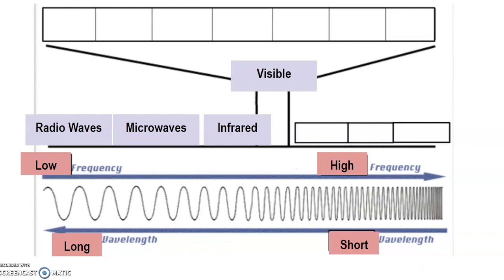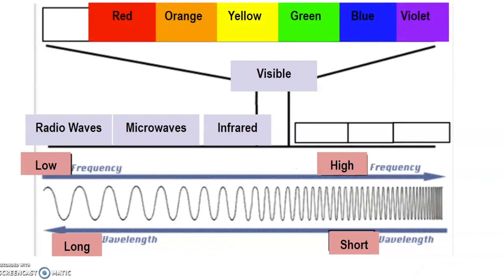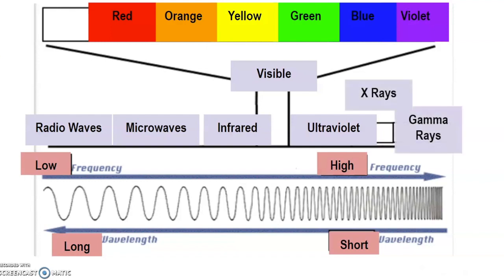In the middle of the spectrum, we have visible light — what we actually see and perceive as color. The colors we see are red, orange, yellow, green, blue, and violet. As we move toward shorter wavelengths and higher frequencies beyond visible light, we get ultraviolet rays, which come from the sun, then X-rays used in medical settings, and finally gamma rays.